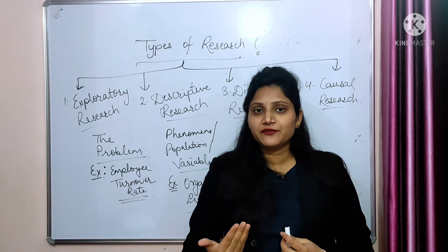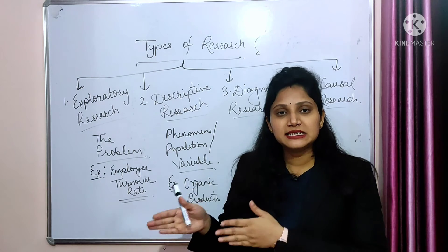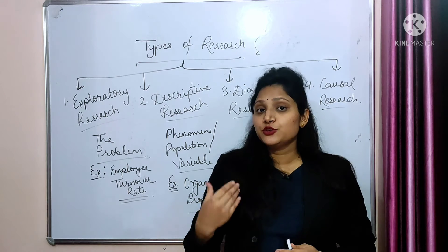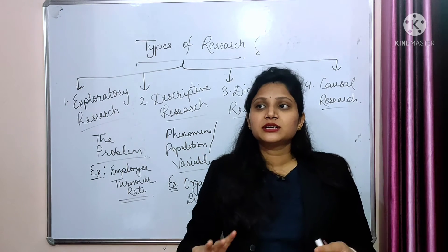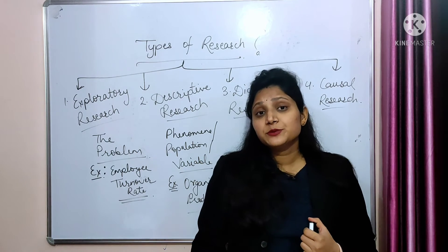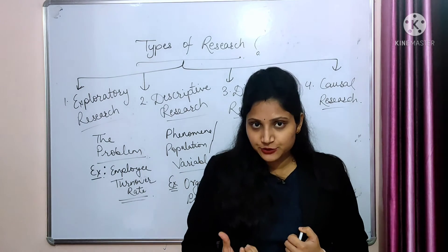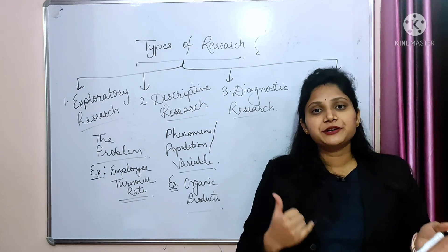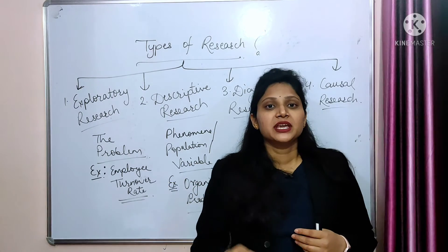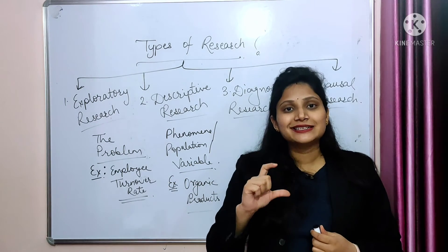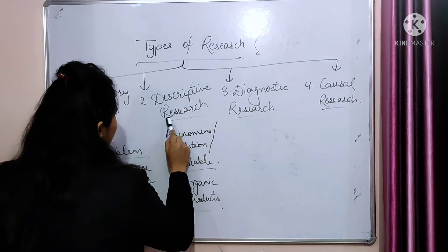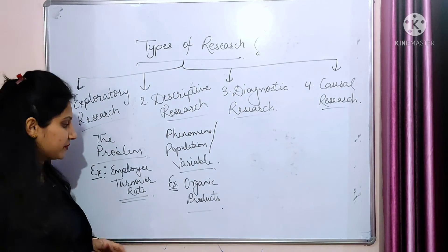After collecting this information from 100 or 150 customers — whatever sample they have considered — the consumer is the variable here. The company describes the characteristics of the consumer. Through this research, the company arrives at a conclusion that consumers who belong to urban cities, belong to a modern age group, and have a higher educational level are more interested in buying organic products. This is descriptive research.